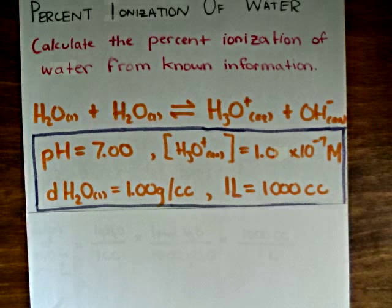If we remind ourselves what percent ionization is, percent ionization is just equal to the concentration of the ionized species—in this case the hydronium ion or the hydroxide ion—it doesn't matter which one you use,